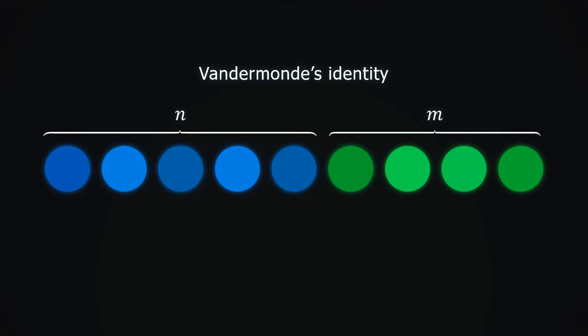Imagine a row of n blue and m green objects. We want to take 4 objects, not caring about their color. There are n plus m choose 4 ways to do this, by definition. We can count this in another way, this time focusing on the color.